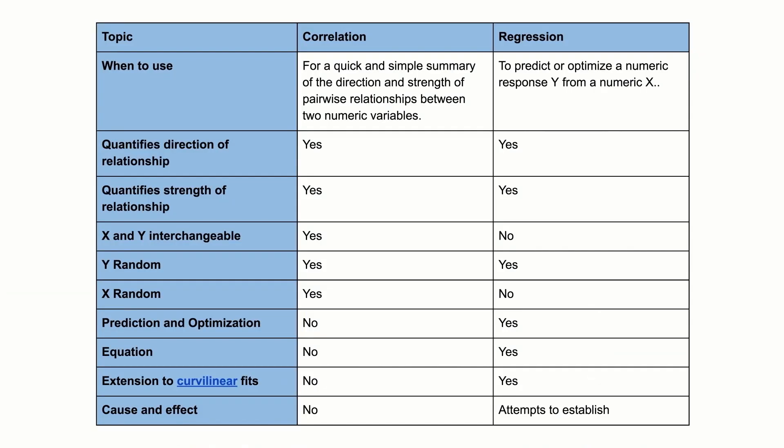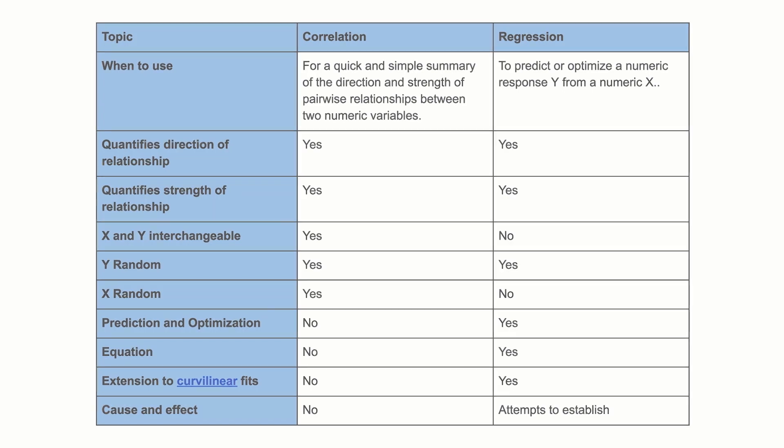In summary, correlation and regression have many similarities and some important differences. Regression is primarily used to build models to predict a response, while correlation is primarily used to quickly and concisely summarize the direction and strength of the relationship between two numeric variables.